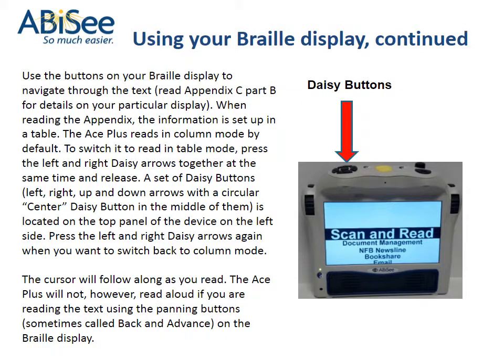To navigate through the text, read Appendix C Part B for details on your particular display. When reading the Appendix, the information is set up in a table. The Ace Plus reads in column mode by default. To switch it to read in table mode, press the left and right daisy arrows together at the same time and release. A set of daisy buttons — left, right, up and down arrows with a circular center daisy button in the middle — is located on the top panel of the device on the left side.